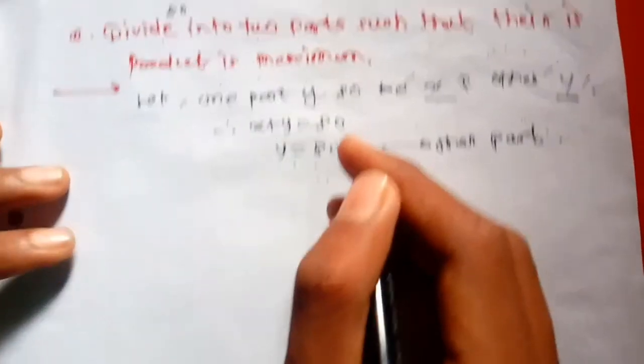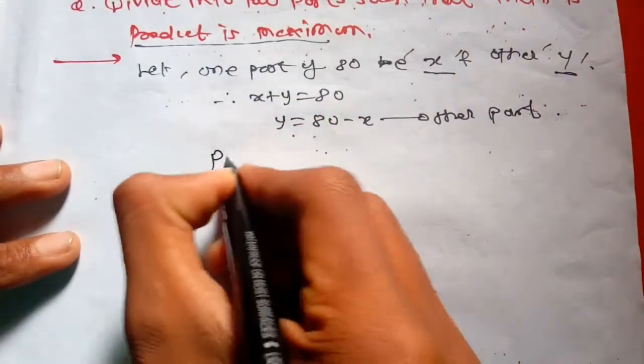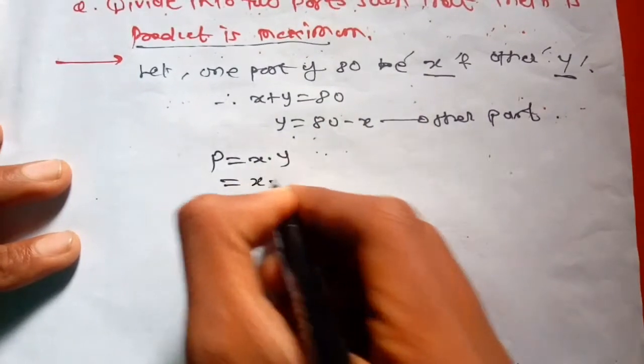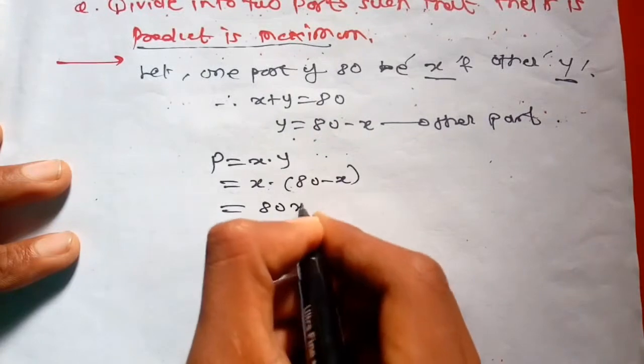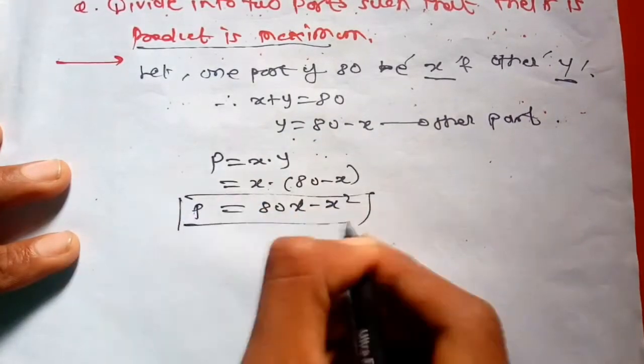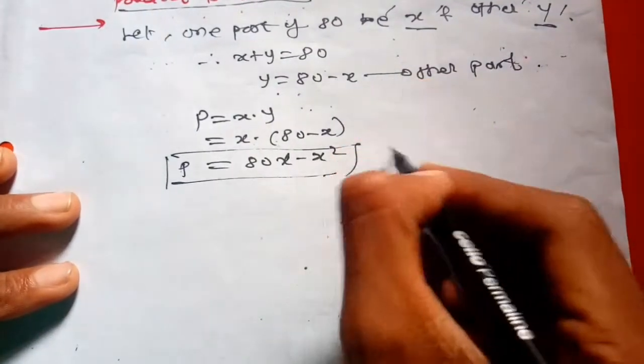According to the question, the product P is equal to X into Y, which is X into 80 minus X. So P equals 80X minus X squared. This is equation number one.